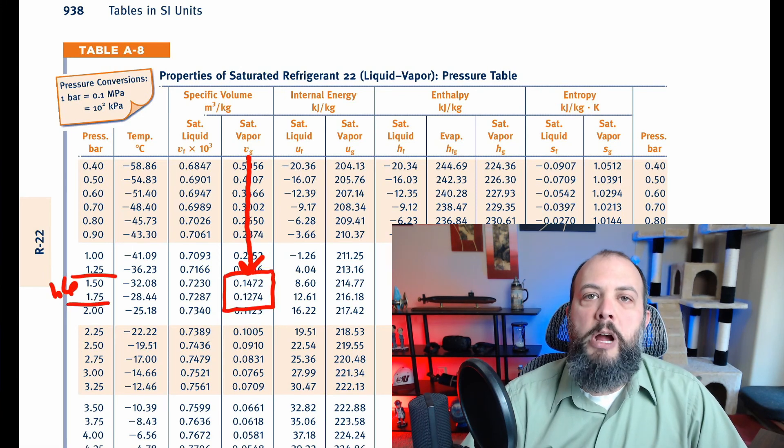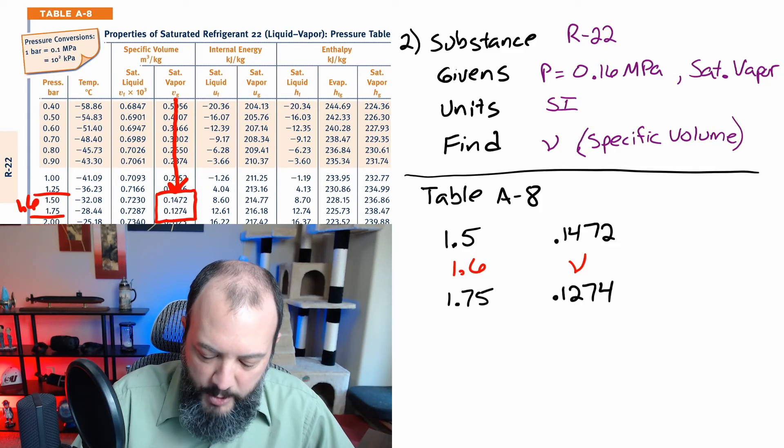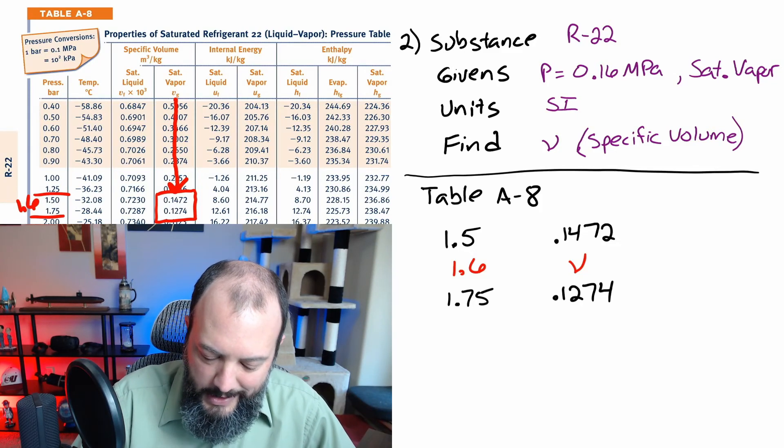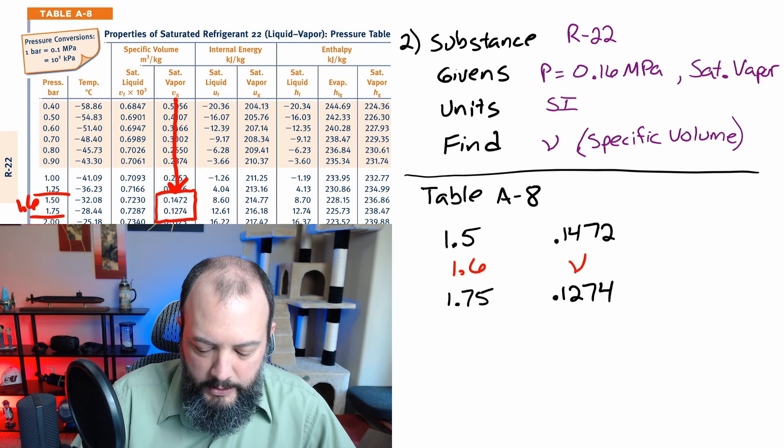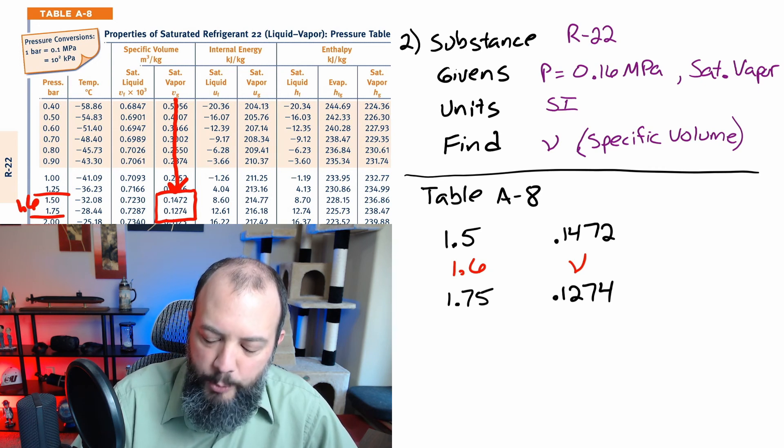So this is going to be a problem of vertical linear interpolation of interpolating between two rows. Fortunately the steps are almost exactly the same. So I'll start off by writing down the values that I know and that I'm trying to find. So 1.6 falls between 1.5 and 1.75 bar. And then I'm looking for the meters cubed per kilogram value that falls between 0.1472 and 0.1274.